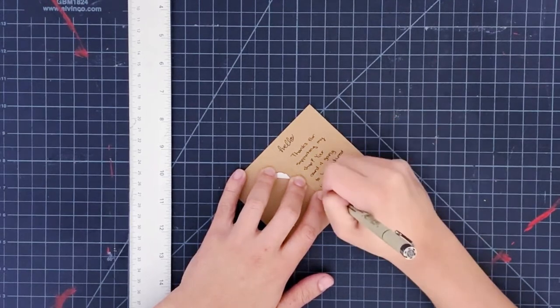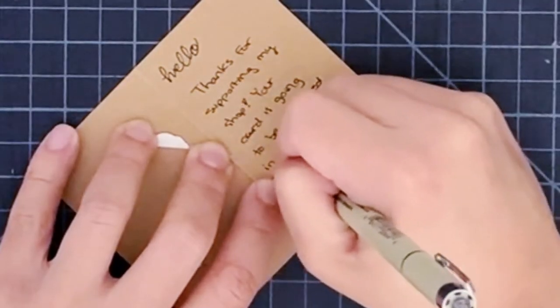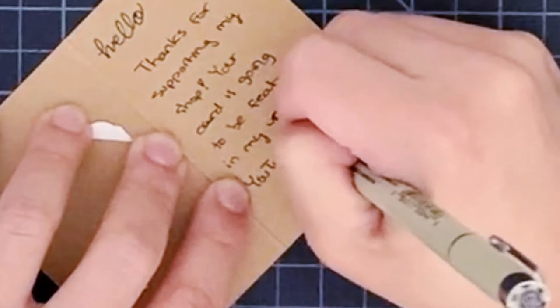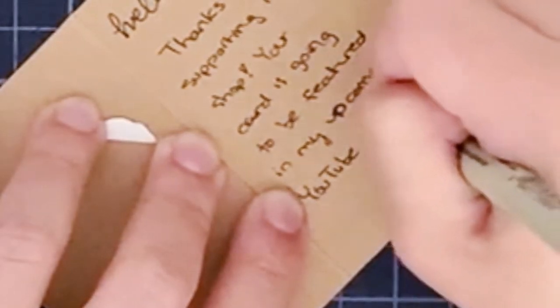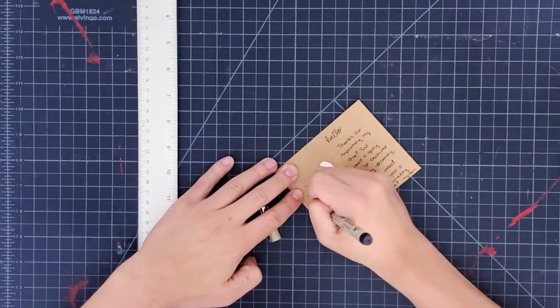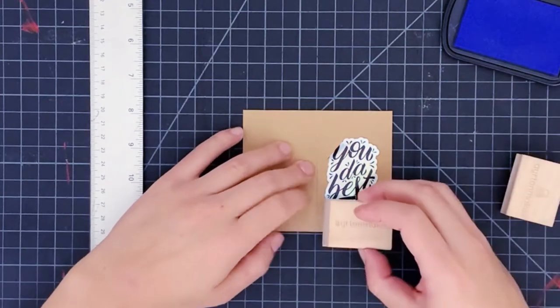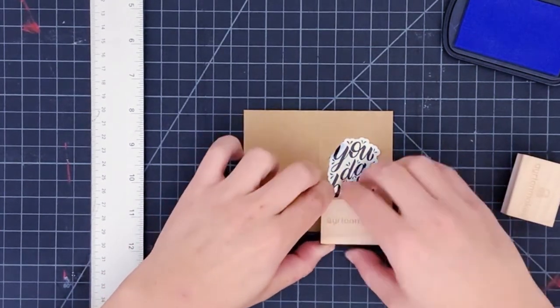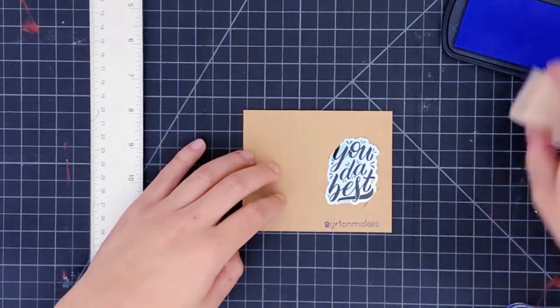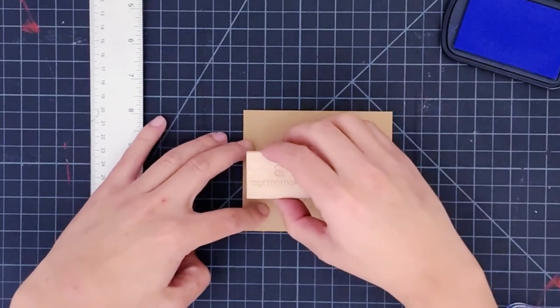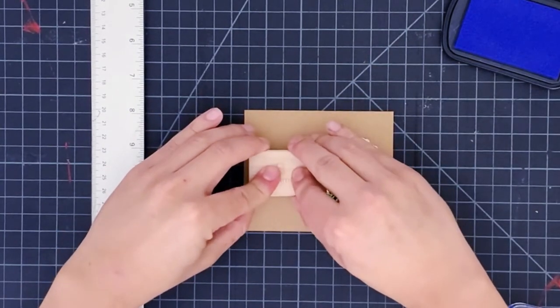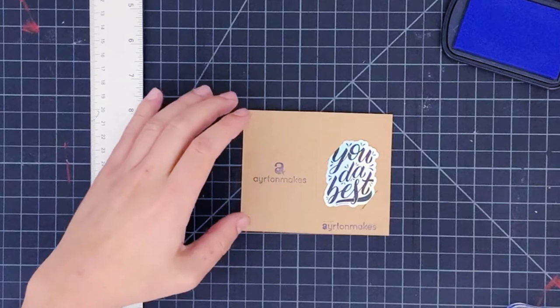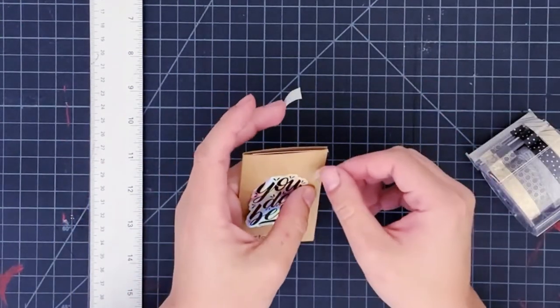Then I add a stamp on the front and back side to add in some branding. Finally I close it up with the washi tape.